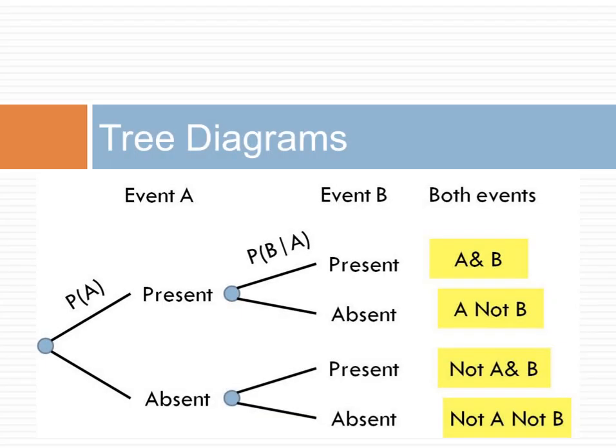The terminal points of the tree show the joint events. Notice that across all paths, all possible combinations of joint events are present.